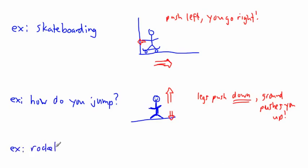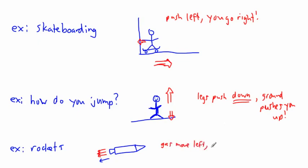What about rockets? People used to think rockets couldn't work in outer space because there was nothing to push against — it's a vacuum. But a rocket works by throwing out material: it has an internal explosion and kicks out gases to the left. So the gases move left, and therefore the rocket moves to the right. That's an action-reaction pair — you push gases out one side, the rocket goes the other way.